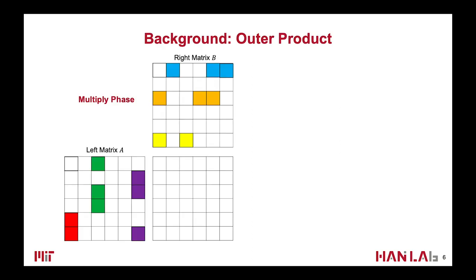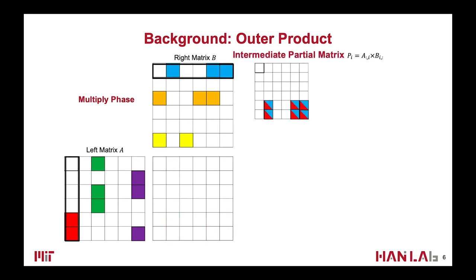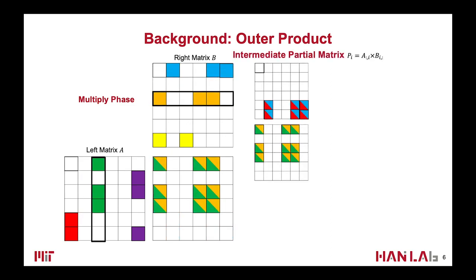One efficient implementation of sparse matrix multiplication is the outer-product-based method, because it can have perfect input matrix data reuse. This method contains two phases: multiply and merge. In the multiply phase, each column of the left matrix will be multiplied by the corresponding row in the right matrix, resulting in an intermediate partial matrix. Just like this — we do outer product between the first column of the left matrix and the first row of the right matrix to get the first partial matrix.